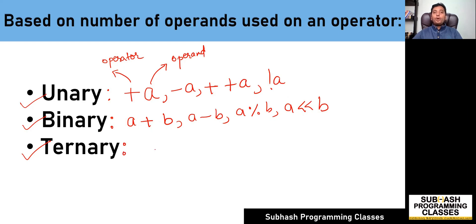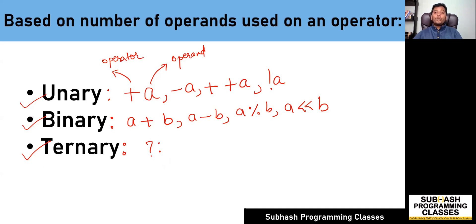Now coming to ternary operators — those operators which operate on more than two operands are called as ternary operators. In C language, there is only one ternary operator, and that is called as the conditional operator, which I'm going to explain in an upcoming lesson. So this is the first way of classifying your operators: based on the number of operands, you can classify them as unary, binary, and ternary operators.